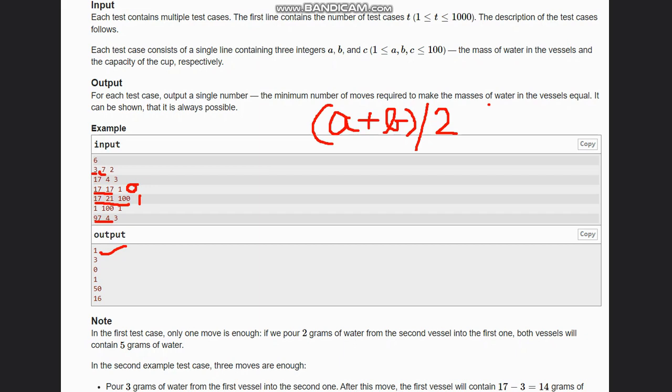Now let's take the example of 97, 4, and 3. So 97 + 4, if we add 97 and 4, it gives us 101. 101 / 2, so this gives us 50.5. And now we have 50.5, and we divide it by 3.